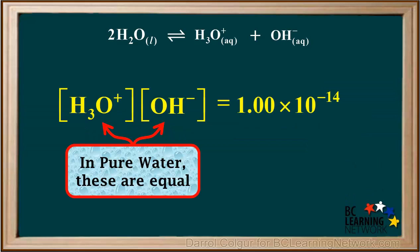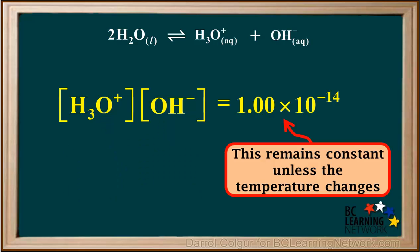In pure water, which is neutral, the hydronium ion concentration and the hydroxide ion concentration are equal. And unless the temperature changes, this value of 1×10⁻¹⁴ remains constant.